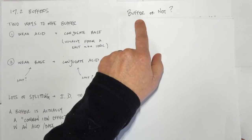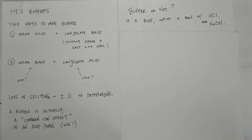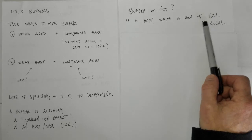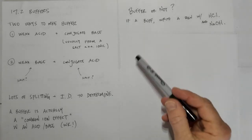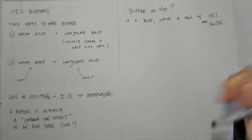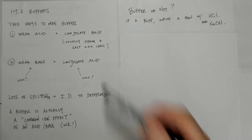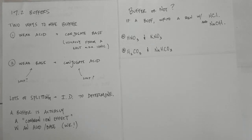We're going to play a game called 'Buffer or Not.' I'll list four examples, and if we determine it's a buffer, we'll write a reaction with HCl and with NaOH to show how the buffer reacts with both an acid and a base — because that's what a buffer does: it keeps the pH from appreciably changing. It has an acid and a base present at the same time. Here's solution A: HNO3 and KNO3. Solution B: H2CO3 and NaHCO3.